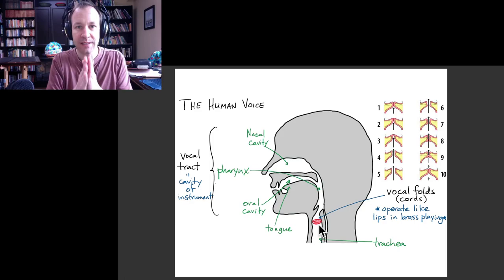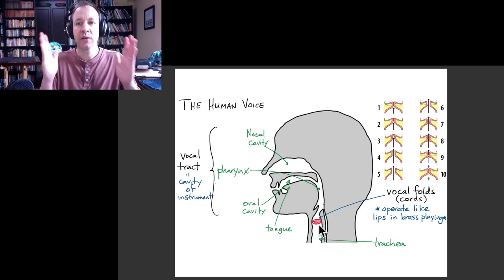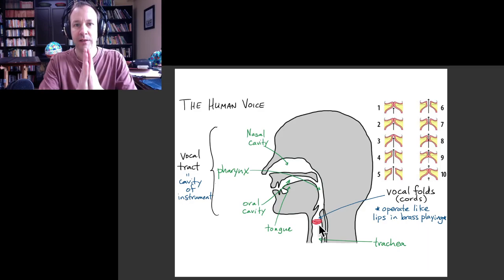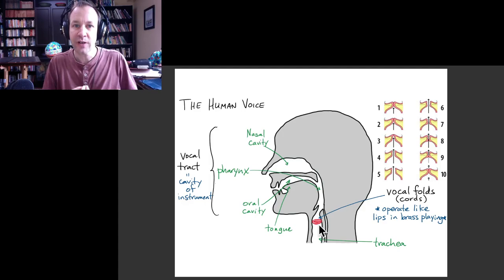You can kind of think of it almost like a pair of lips inside your throat. These can open when you're breathing, or they can come together when you're talking or singing. When you sing, what happens is that you bring the vocal folds together so they're closed, but then you increase the pressure inside your lungs, inside your trachea.